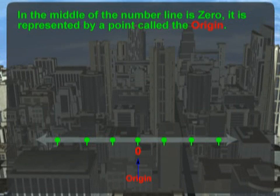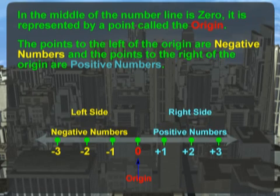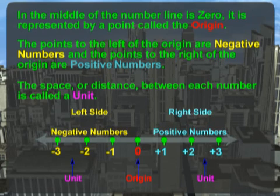Let's take a close look at a number line. In the middle of the number line is zero. It is represented by a point we call the origin. The points to the left of the origin are negative numbers, and the points to the right of the origin are positive numbers. The space, or distance, between each number is called a unit. The arrows at both ends of the number line mean that the line continues forever in both directions.